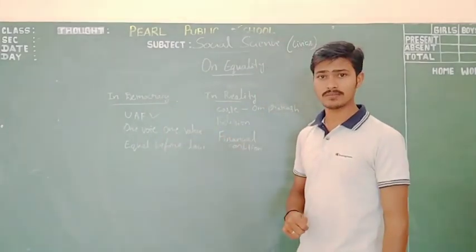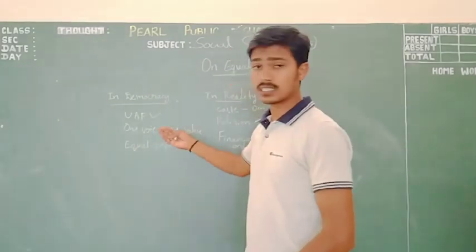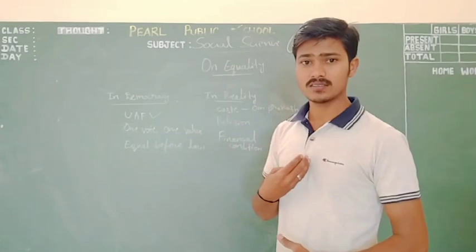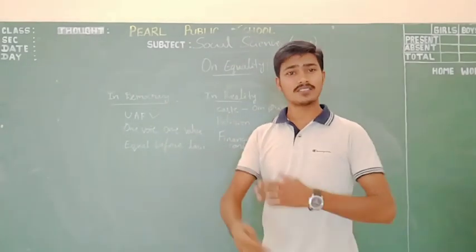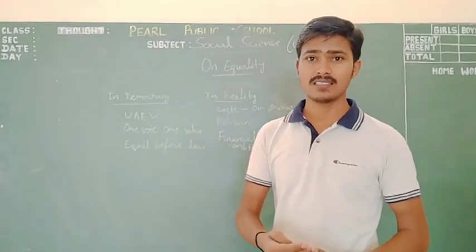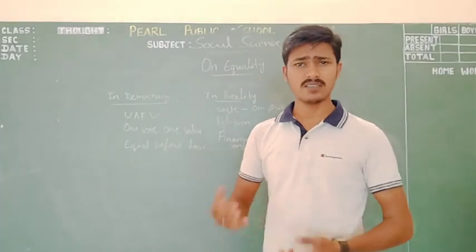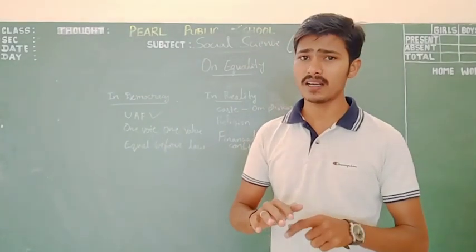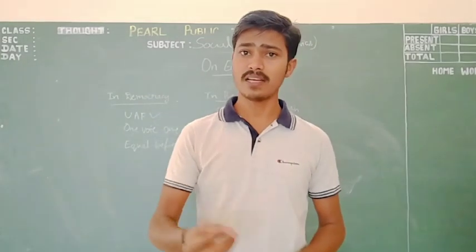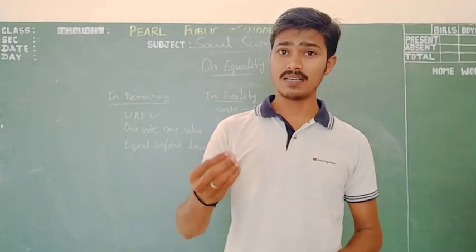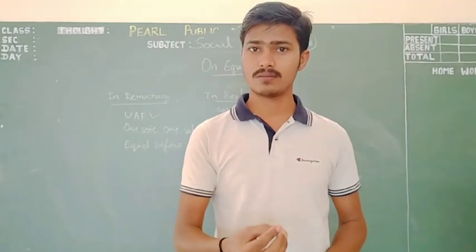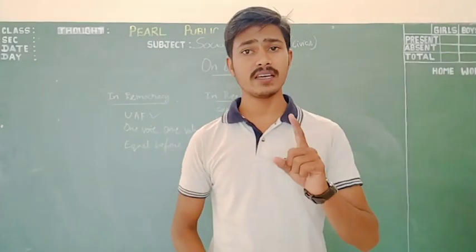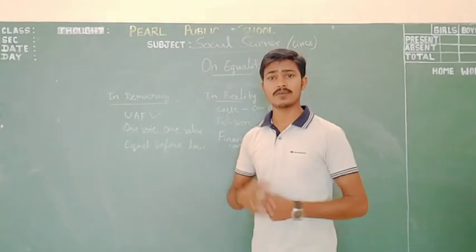Then one vote, one value. We already knew about universal adult franchise. Now when it comes for their vote, my vote, your vote - after 18 years you will be getting - your parents, even prime minister, even president, chief minister, everyone will be having one vote. And the value for that vote will be same for everyone. My vote is also having the same value as well as our prime minister's vote. Whoever it is will be having only one vote and same value. That is equality, so it is confirmed.